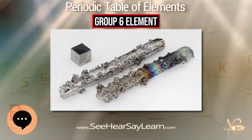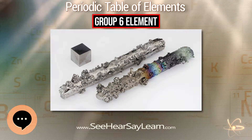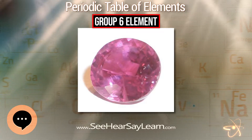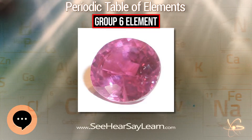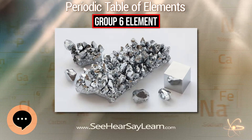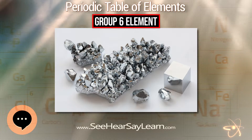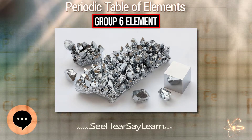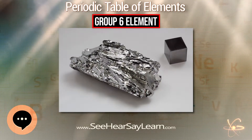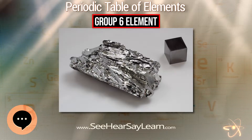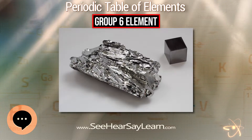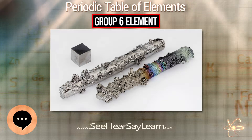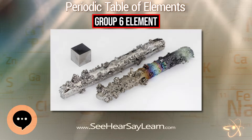Group 6 is the new IUPAC name for this group. The old-style name was Group VIB in the old US system or Group VIA in the European system. Group 6 must not be confused with the group with old-style names of either VIA or VIB — that group is now called Group 16.